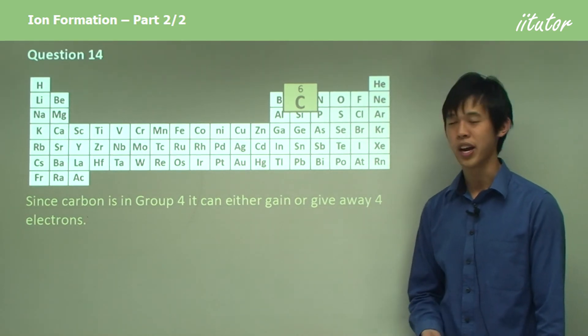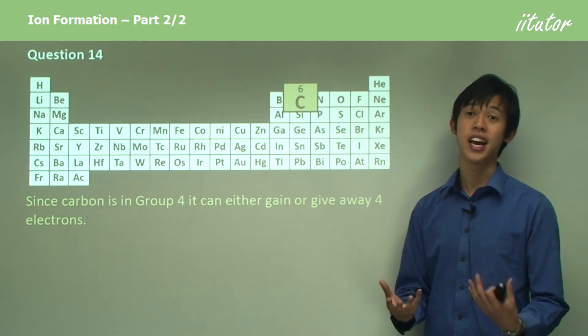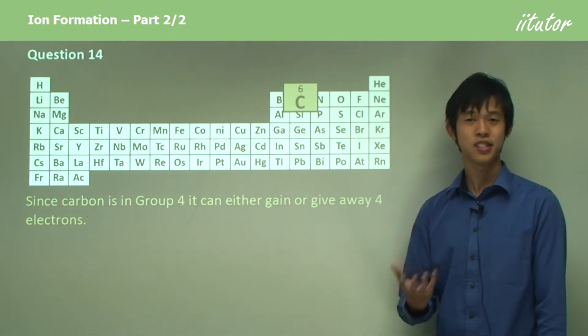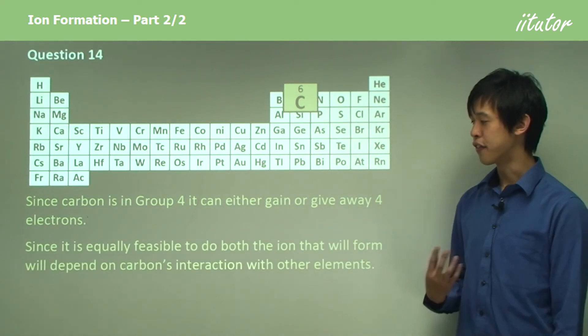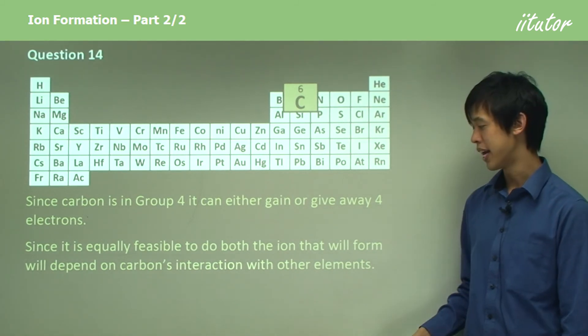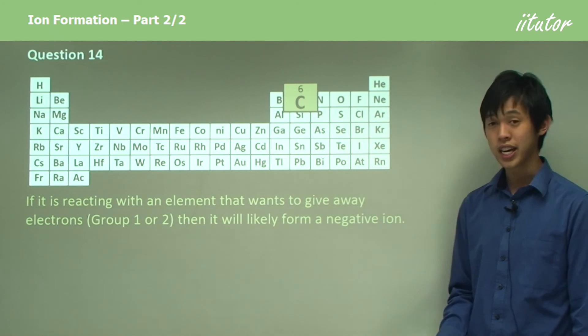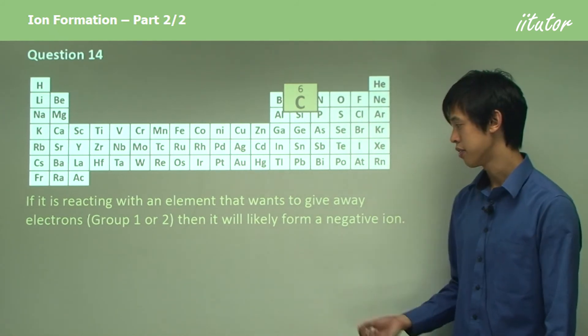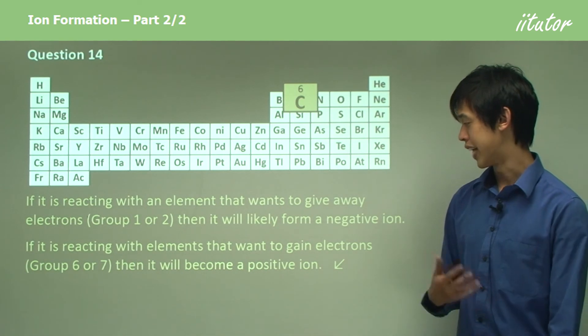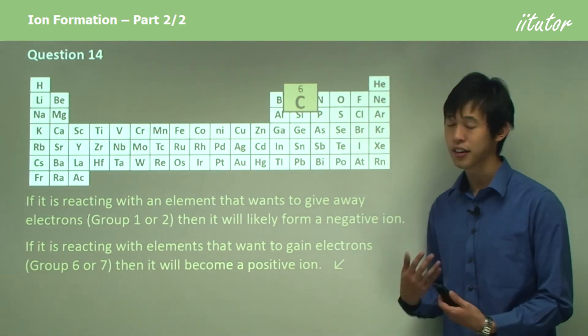You can either gain or give away four electrons. It's got four in its outer shell. It needs to make eight or get rid of four. So it can gain four electrons or give away four electrons. The question becomes: which one's easier? It's equally feasible to do both. The ion that carbon will actually form will depend on the other elements it's interacting with. If it's reacting with an element that strongly wants to give away electrons, then it will likely form a negative ion because it will take those electrons in. If it's reacting with elements that want to gain electrons, it will likely become a positive ion because it will want to give those electrons away.